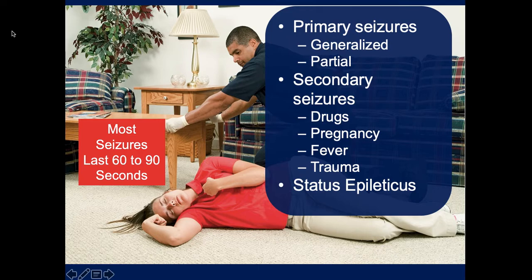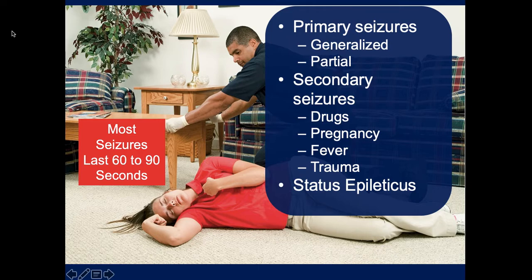Secondary seizures look exactly the same as primary seizures—the difference is the cause. These can be triggered by cocaine or amphetamine use, drug or alcohol withdrawal, or eclampsia of pregnancy in patients in their last trimester. Fever can cause seizures primarily in infants and small children. Trauma is another cause—a blow to the head causing bleeding into the cranial vault can trigger seizures, and people with traumatic brain injuries can develop ongoing seizure disorders because scar tissue from brain remodeling leads to the condition.